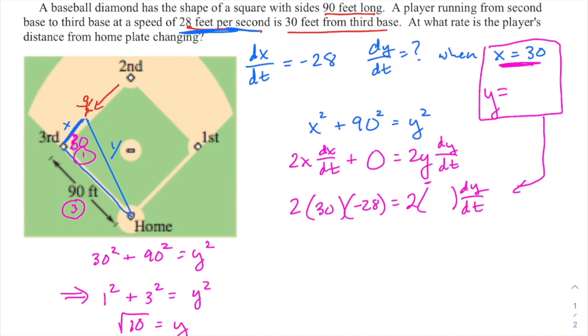And you get what y would be on that reduced triangle. So now I'll just convert back. The real y I'm looking for is—I divided everything by 30, so I'll multiply—this is 30 root 10. So that's what y is at that moment, and that means I can plug that in here. Now I have all the missing quantities and simplify.